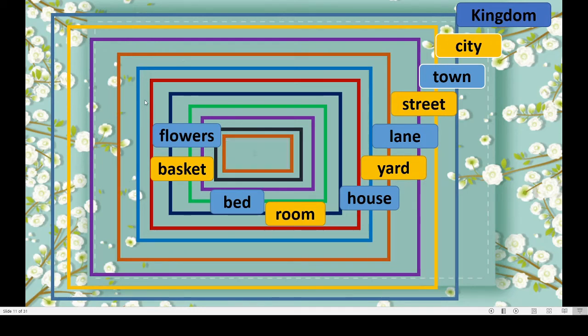This is all about our poem. In this poem, we have learnt about how to arrange the given things according to their sizes — from smallest to biggest or from biggest to smallest. Now children, we will move to the exercise part.